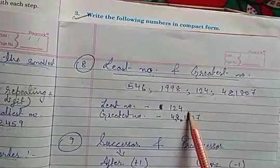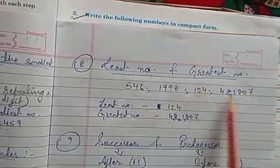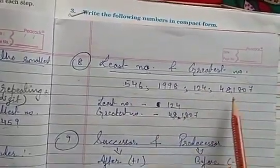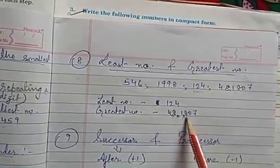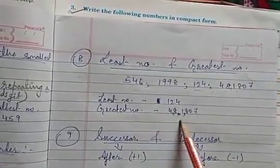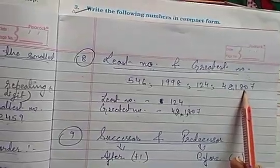So 124 is the smallest among all these numbers and 481807 is the greatest number among all these given numbers.